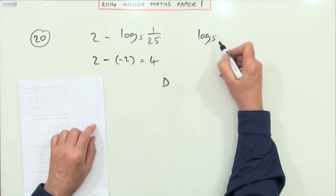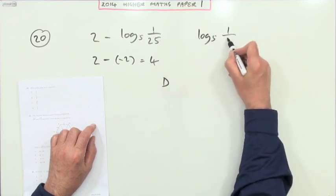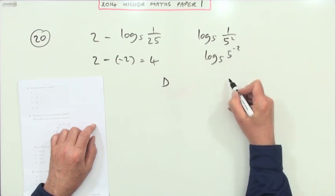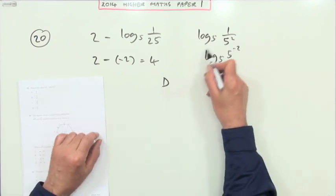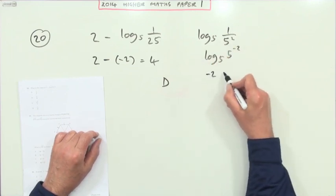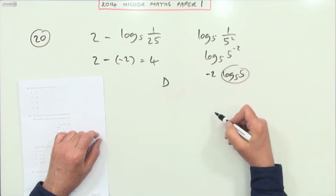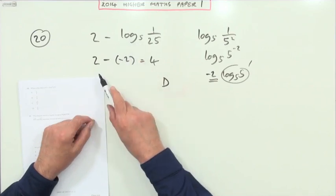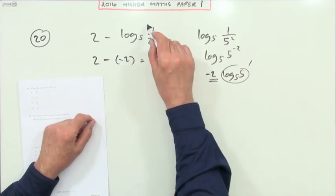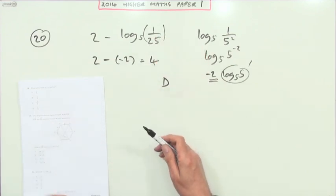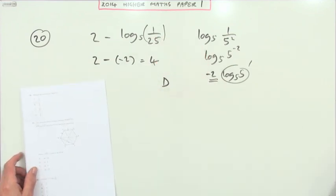You could play around with that and say I've got log 5, and that's 1 over 5 squared, so that's log 5 of 5 to the negative 2. By definition, what power of 5 is that? Negative 2. Or you could take that negative 2 to the front, and you know that that comes to 1, so you're left with negative 2. But you should have known that anyway—log base 5 says what power of 5 is this thing I'm operating on. That's quite clearly power negative 2, so D for that one.